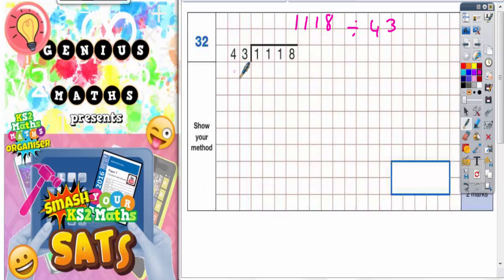Now because we're dividing by a very large number here, 43, we're going to use the chunking method. So we need to write down some chunks of 43.